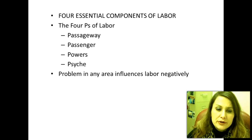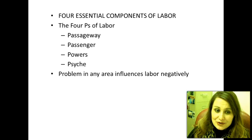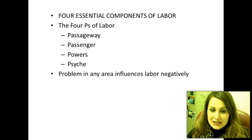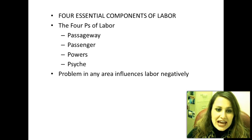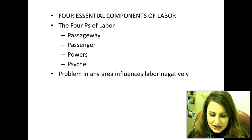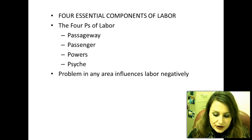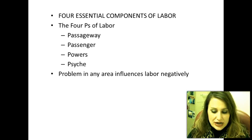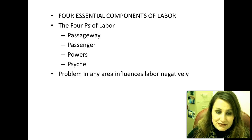There are four essential components of labor, called the four P's: passageway, passengers, powers, and psyche. Any problem in any of these areas will influence the labor negatively. The passageway refers to the bony pelvis and the soft tissues of the cervix and vagina. The passenger is the fetus. The powers are the maternal pushing effort — the involuntary muscle contractions of the uterus. The psyche has many factors but refers to the psychological state of the laboring woman.